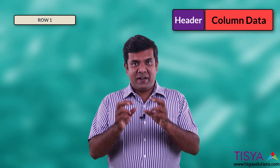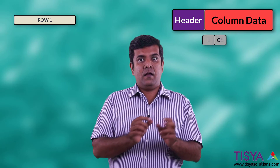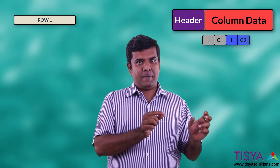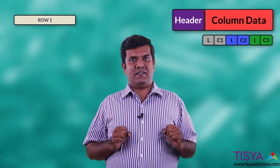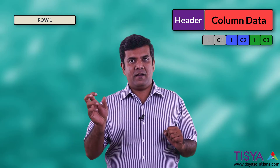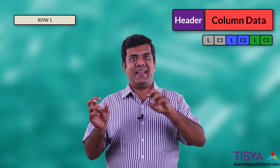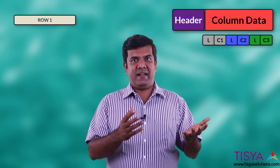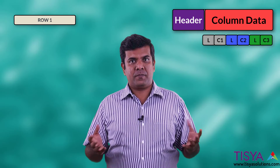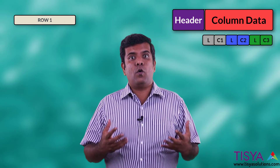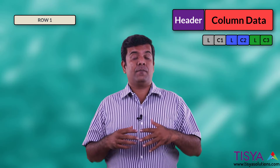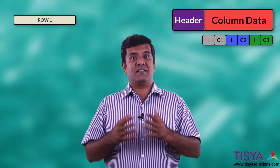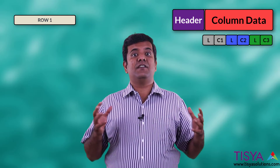Every column, when it is part of the row, is going to have the column length followed by the column data — column length, column data. So at the end of the day, when you have a row inside the block, you have the row header and the list of all columns, their lengths, and their data stored in the row. This is what a row looks like in an Oracle database. A row can have just one piece or more than one piece, depending on the size of your block and the size of your row.